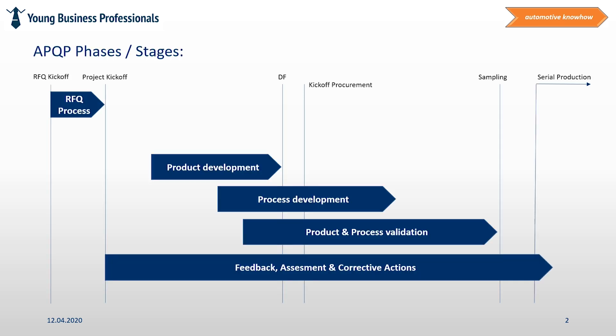What is the purpose of APQP Phase 1, project planning? After receiving the project nomination from the customer at the end of APQP Phase 0, the project planning phase is kicked off. The purpose of this phase is mainly to plan all activities and resources that will be needed in the whole project.